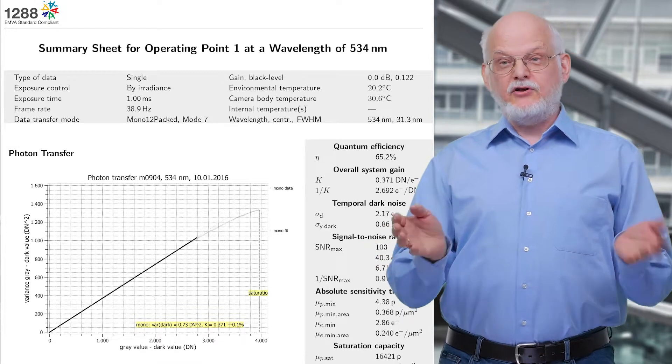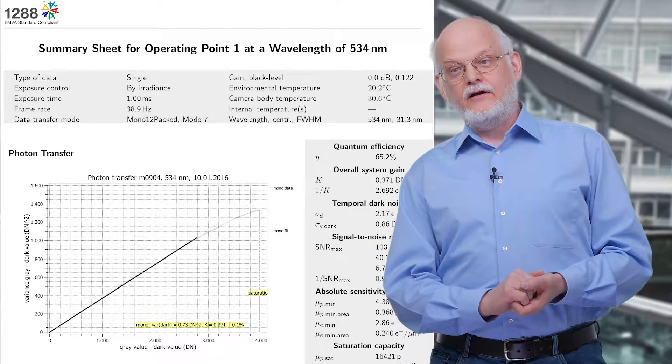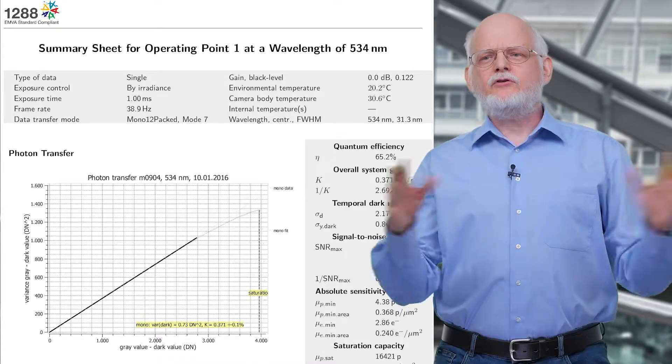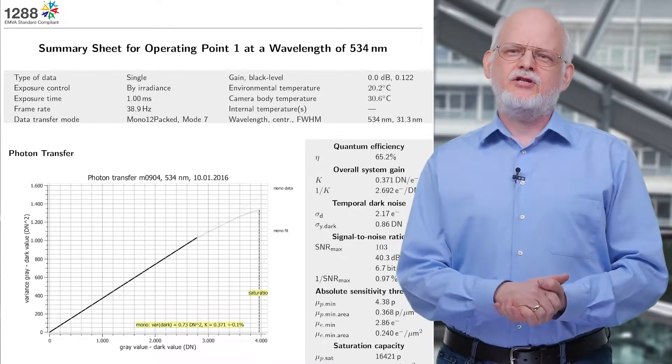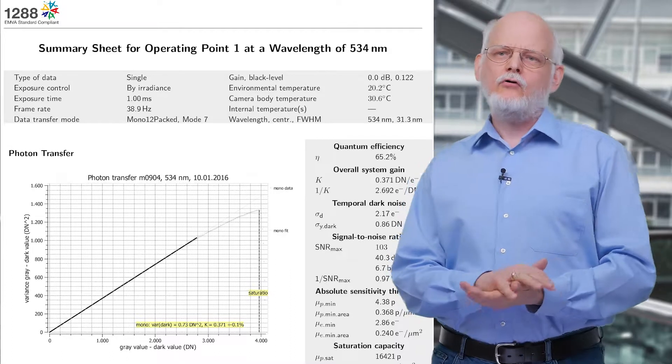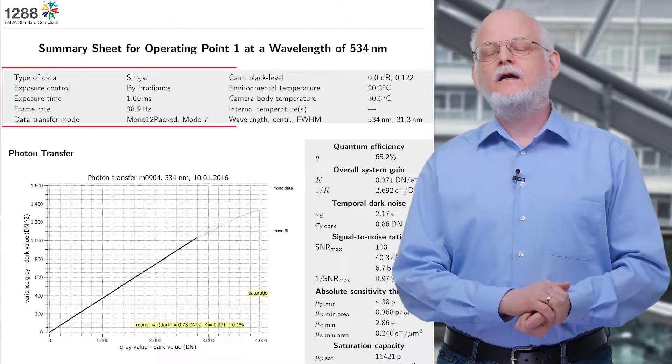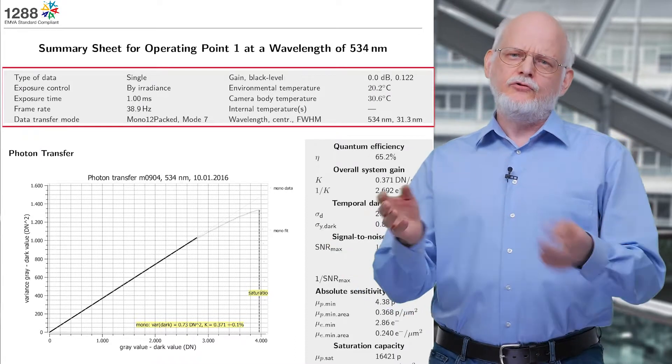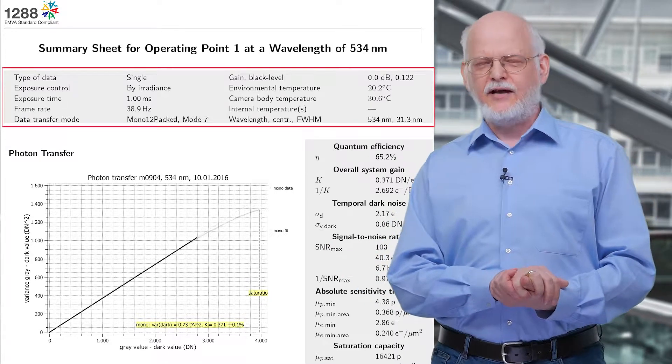Let me explain to you what you all find on this data sheet. The first column on top of the summary sheet describes the so-called operating point, which gives you all the parameters so that it is easy to repeat the measurements done again.